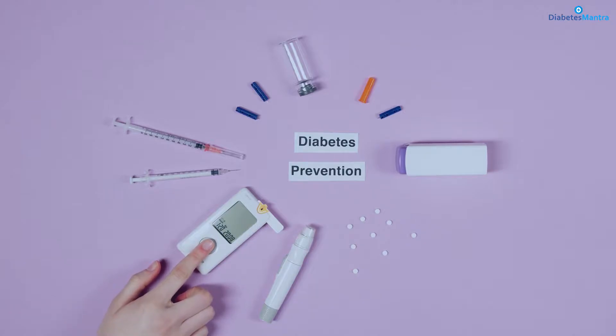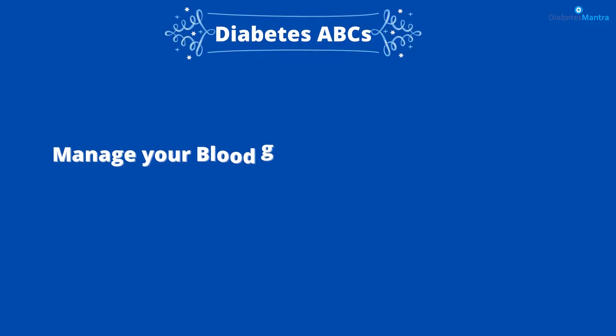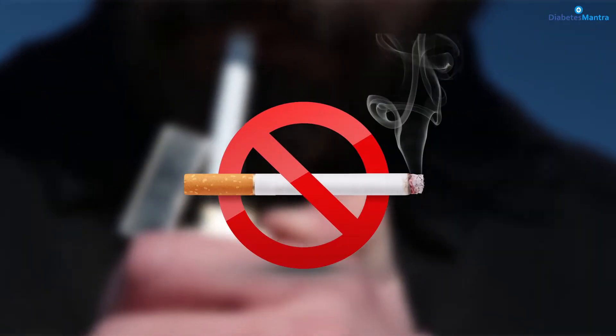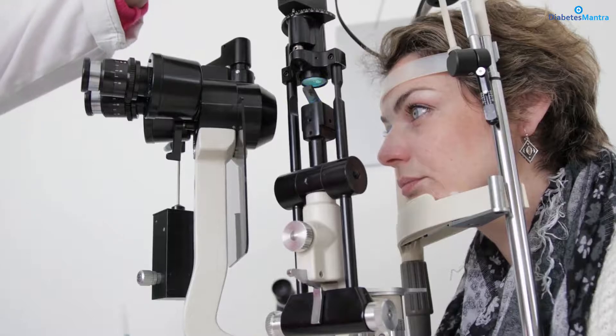The best way to manage your diabetes and keep your eyes healthy are to manage your blood glucose, blood pressure and cholesterol, sometimes called diabetes ABCs. If you smoke, get help to quit smoking. Have a dilated eye exam once a year. Often there are no warning signs of diabetic eye disease or vision loss when damage first develops. A full dilated eye exam helps your doctor find and treat eye problems early, often before much vision loss can occur.